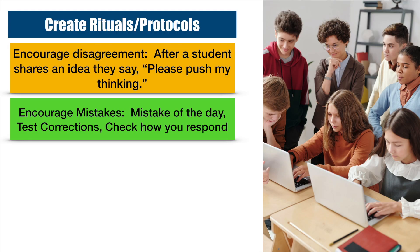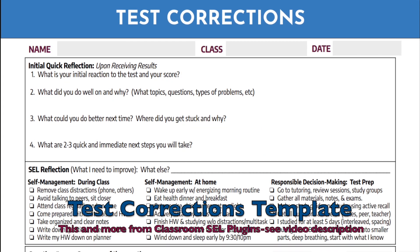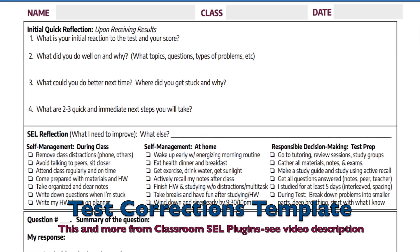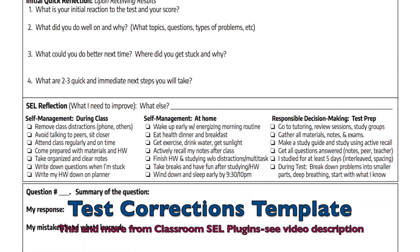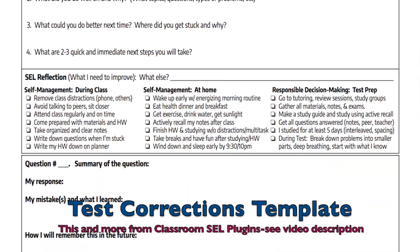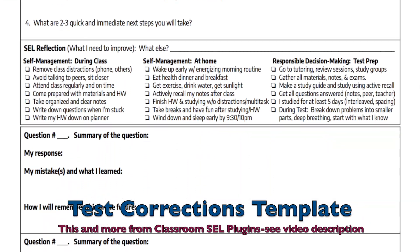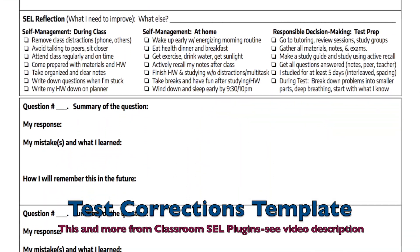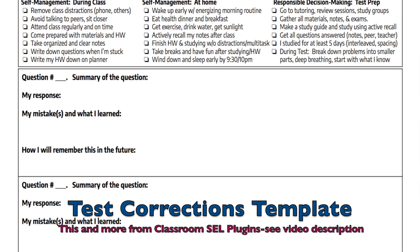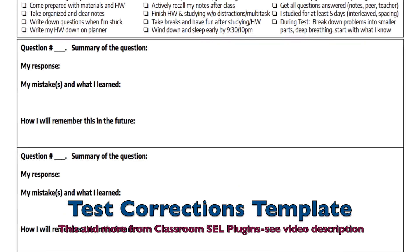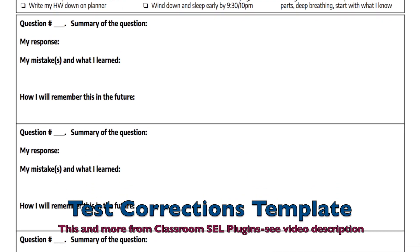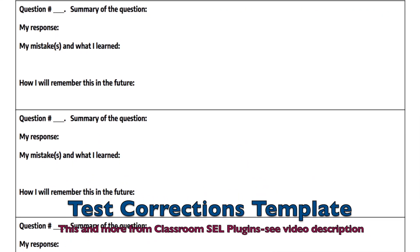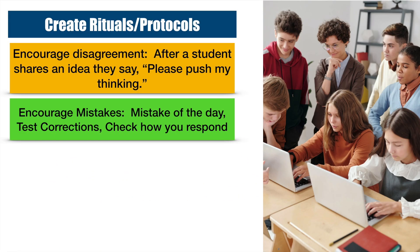Have students do test corrections after they receive their exam. They have to find the correct answers to the wrong questions, explain their mistakes, how they found the answer, how they'll remember it, and summarize their key takeaways. You can incentivize it by giving them some points back on their test.